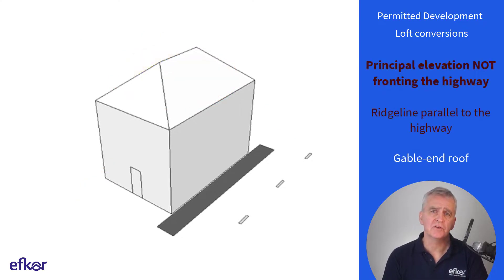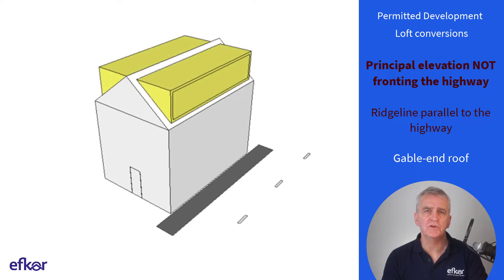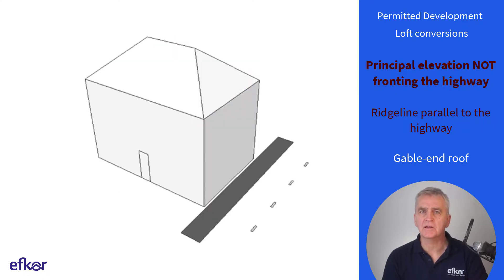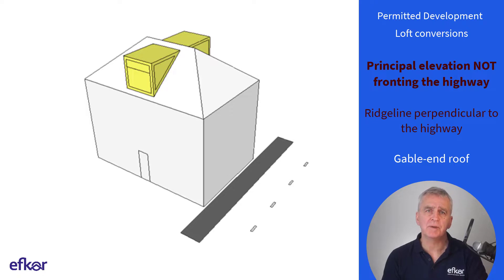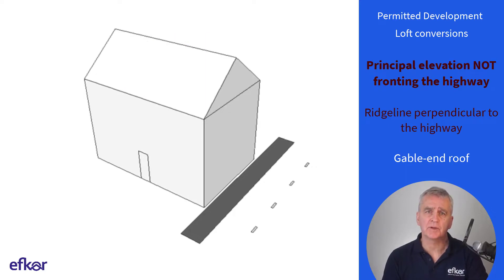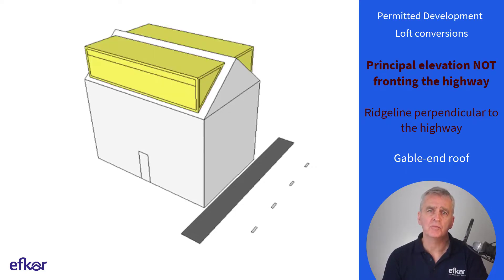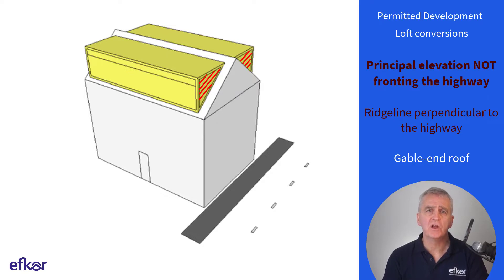If the hipped roof is converted to a gable end roof, two full-length dormers can be added, or an entire mansard roof can be built. In this instance, the main glazing of the dormer windows does not require obscure glass, making it a far more attractive option.